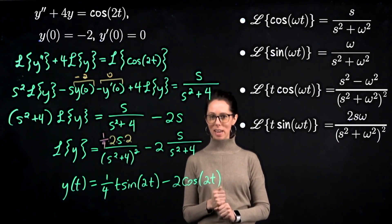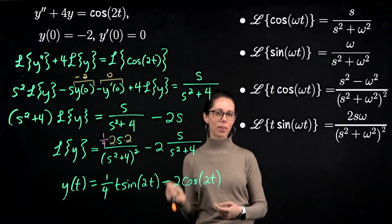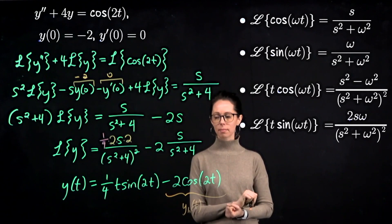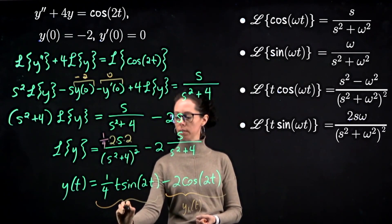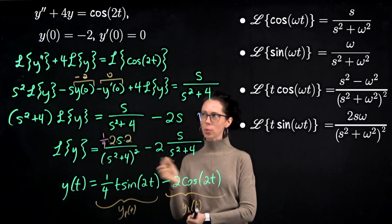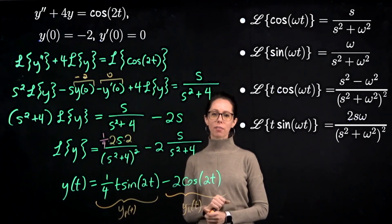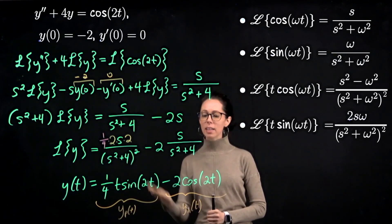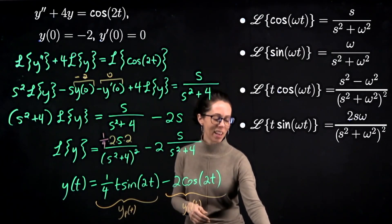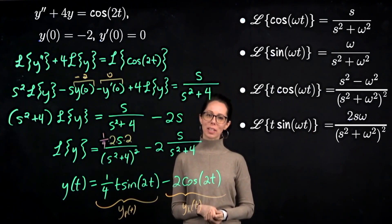Comparing to solving via the characteristic equation and method of undetermined coefficients: negative 2 cosine of 2t is the homogeneous solution, and one-fourth t sine of 2t is the particular solution — the behavior caused by the forcing function cosine of 2t. Because that cosine of 2t repeats the natural motion of the harmonic oscillator, it causes resonance, reinforcing the oscillation and picking up that factor of t. That's what happens when resonance occurs in this kind of differential equation, and it brought in some new Laplace transforms.